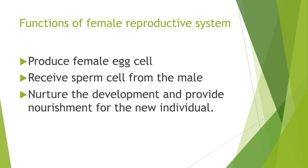Now that you have learned the parts of the female reproductive system, here are the major functions: Number 1 is to produce a female egg cell — an egg cell is needed to create a baby. Number 2 is to receive sperm cells from the male — a baby cannot be created with only an egg cell, so we need a sperm cell from the male. Number 3 is to nurture the development and provide nourishment for the new individual — if a baby is being made, we have to give proper nourishment.